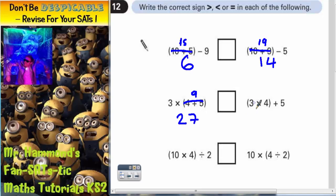This one, bracket first. 3 times 4 is 12. Pop that over the top. So it's whatever's in the bracket add 5. So it's 12 add 5. So that's 17.